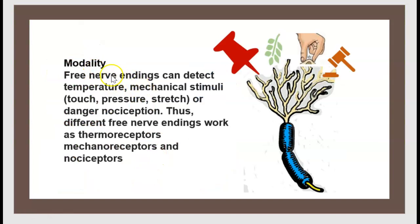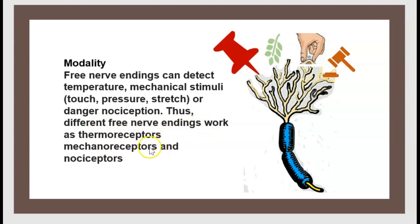In terms of modality, free nerve endings can detect temperature, mechanical stimuli like touch, pressure, and stretch, or danger — nociception. Different nerve endings work as thermoreceptors, mechanoreceptors, and nociceptors.